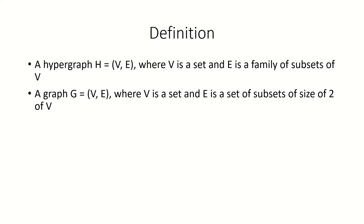If you compare this to the definition of a simple graph, the only two differences are that for a graph, E is a set of distinct pairs of vertices, while in a hypergraph, E is a family of subsets of vertices of any size. That is, it allows for the same subset to appear more than once, and the subsets don't just have to be pairs.